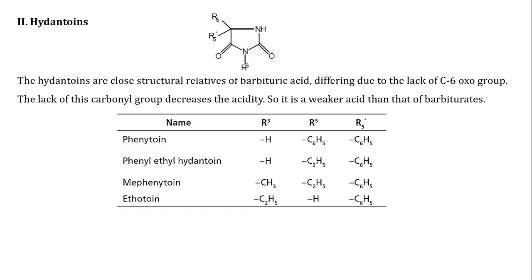Similarly, Hydantoin derivatives: Hydantoins are close structural relatives of barbituric acid, differing due to the lack of the C6 oxo group. The lack of this carbonyl group decreases the acidity, so it is a weaker acid than Barbiturate. Hydantoin derivatives are obtained by substitution in the basic skeleton of Hydantoin at R3, R5, and R5' positions. The example of an anti-convulsant Hydantoin derivative is Phenytoin.